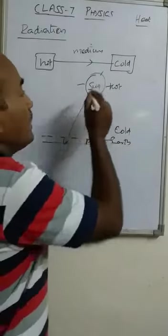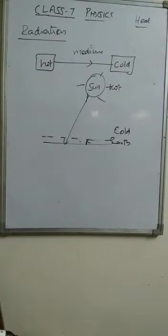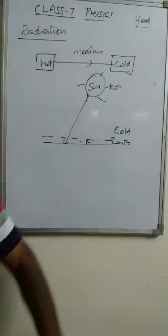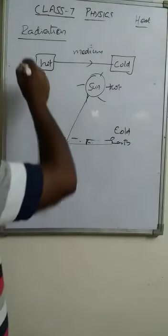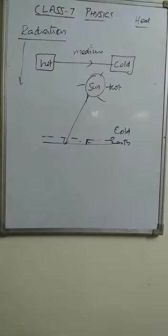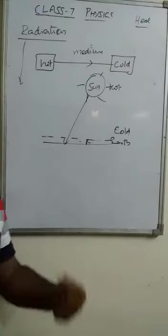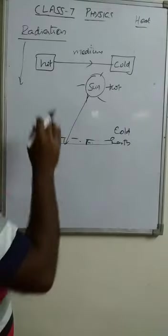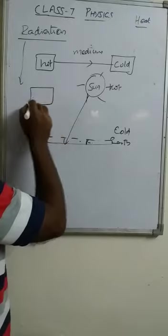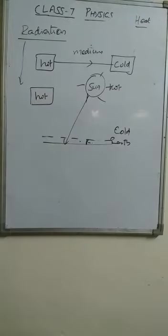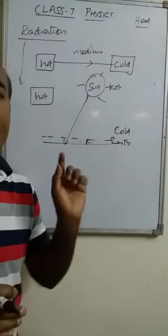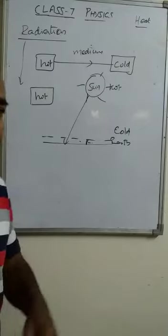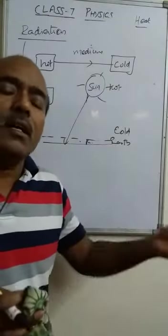We say the heat is radiated from the sun — not that the heat is released from the sun, but that it is radiated. Now, which kind of objects can radiate heat? We can say that all hot objects — every hot object — radiate heat. Examples of objects in our surroundings that radiate heat can be discussed in the next video.